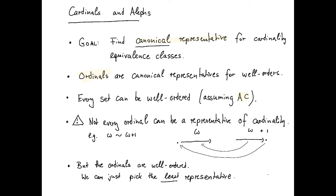So we can expect to pick out our canonical representative among the ordinals. The problem, however, is that not every ordinal can be a representative of cardinality. For example, if we look at just the two ordinals omega and omega plus one.